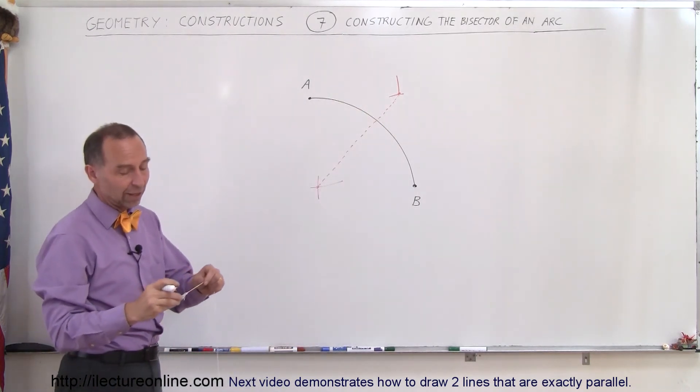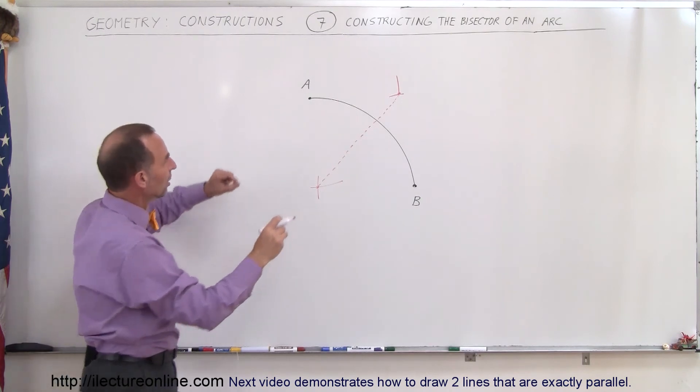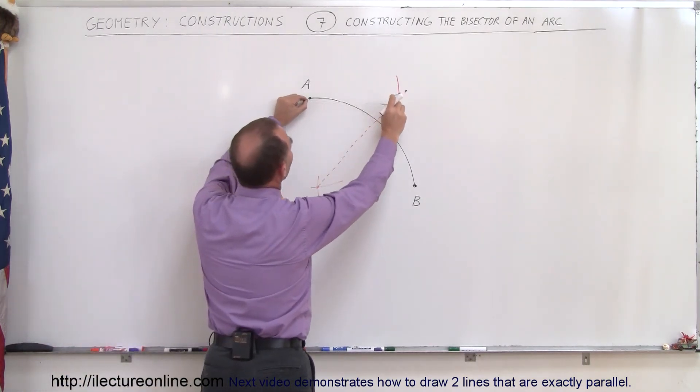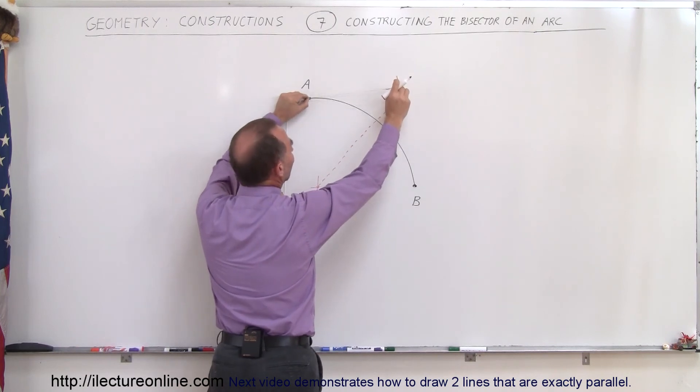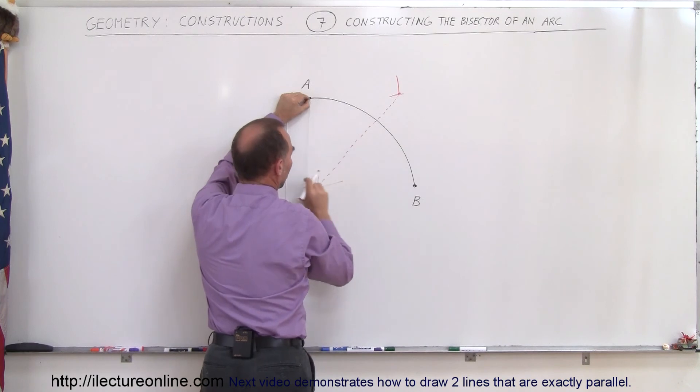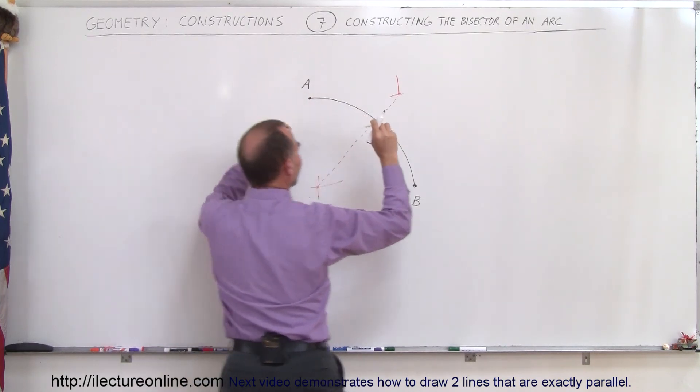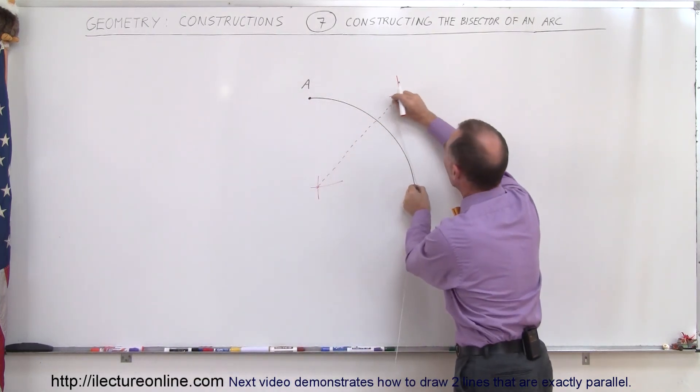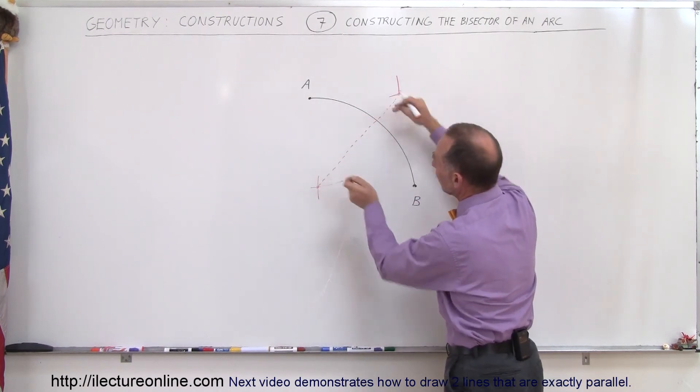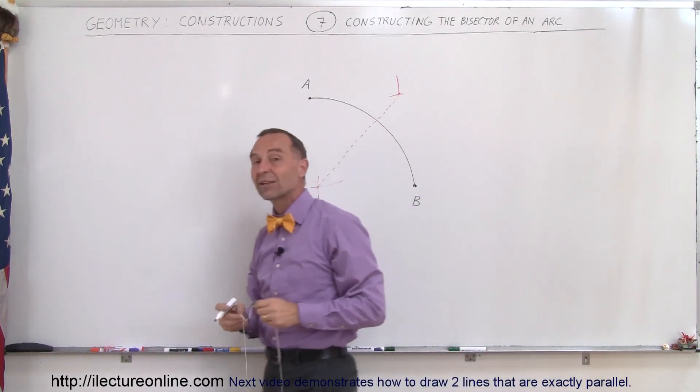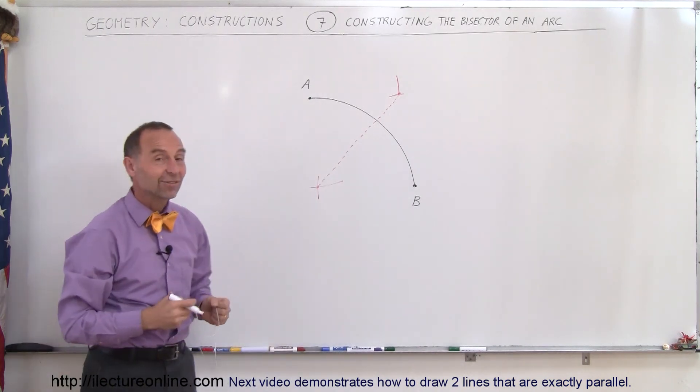Again, you do it exactly the same as with the line segment. You take your pen, you put it through the loop, and then you go ahead and you draw a little arc going this way. And you put one end at the far end of the arc, at the end point right there. You draw another little line this way. You use the very same length. You come to the other point. You draw a second line here. You draw a second line there where the two cross. You connect them. And that's then the bisector of your arc. And that's how it's done.